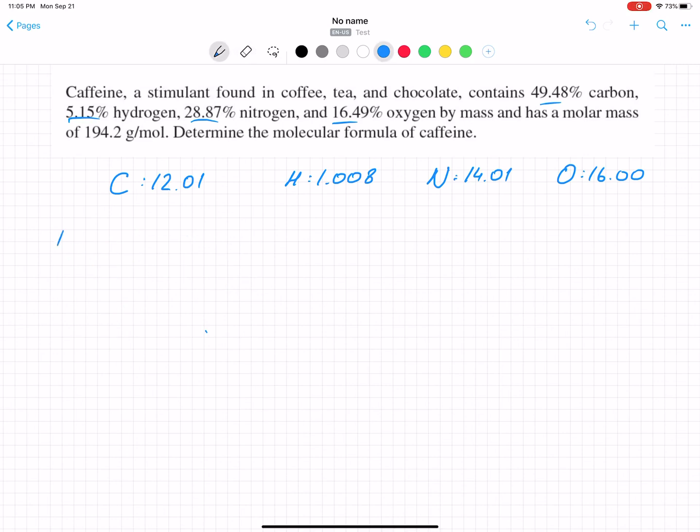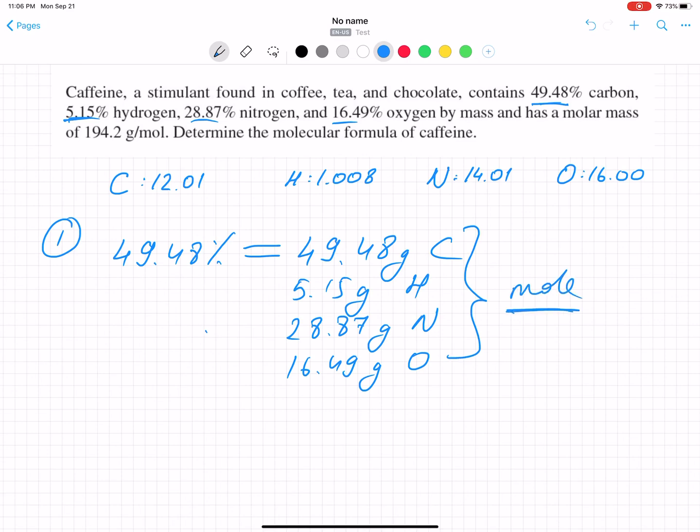Let's dive in how to do that. Empirical formula. Let's find, first of all, empirical formula. We have those percentages, 49.48%, 5.15%, and we will assume this happens in 100 grams of sample. That's why those percentages will automatically convert to grams. So I have 49.48 grams of carbon, I have 5.15 grams of hydrogen, I have 28.87 grams of nitrogen, and oxygen is 16.49 grams of oxygen. If I have the grams, I can find the moles.